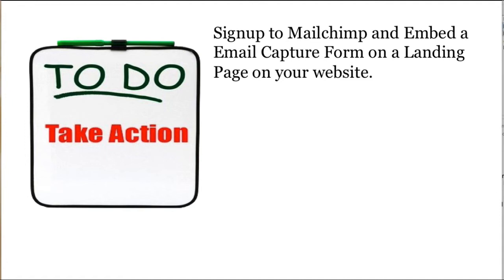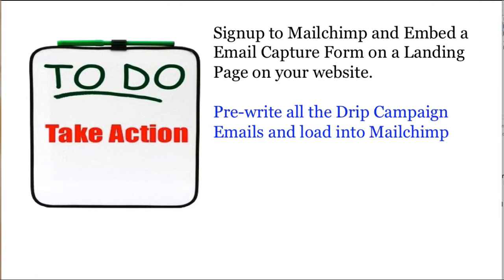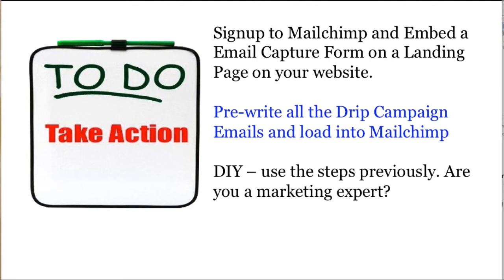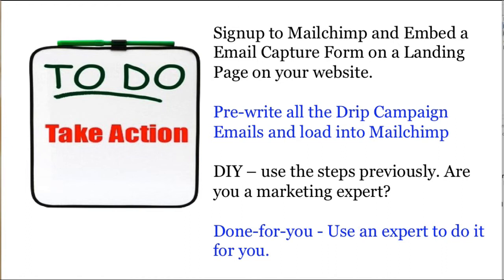Here are some actions you need to take. You need to sign up to MailChimp and embed an email capture form on your landing page on your website. You'll need someone that understands how to work on your website to create that landing page and embed that form — it's a good idea to get your web designer to do that unless you are very clued up with web design. You would then pre-write the drip campaign emails and load them into MailChimp. They only have to be done once and then never again because they will be sent automatically. Now, the big question here is: are you a marketing expert? If you're a builder, for example, you're probably not a very clued up marketer and you should maybe get somebody else to do that. Use an expert to do this for you and focus on what you're an expert in, and you'll get a much better result.